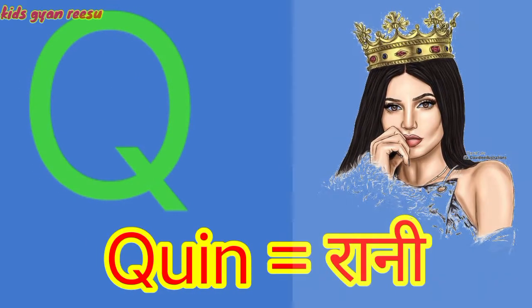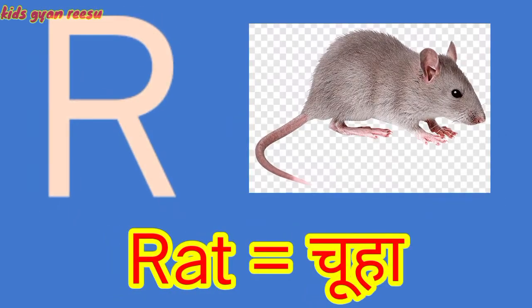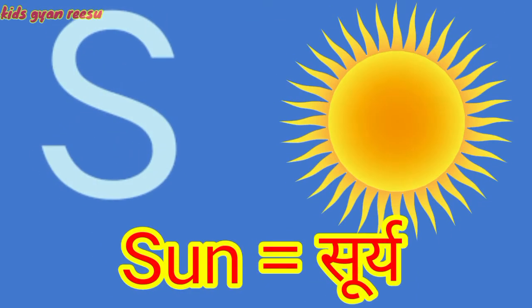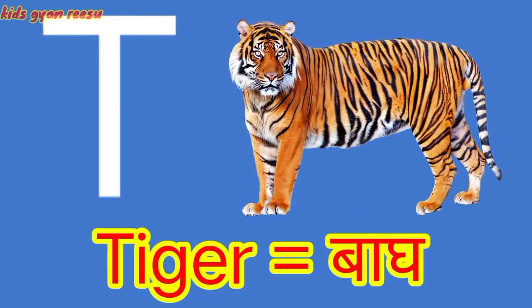Q for queen, R for rat, S for sun, T for tiger.